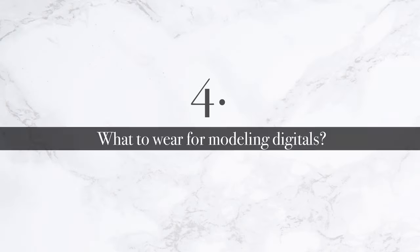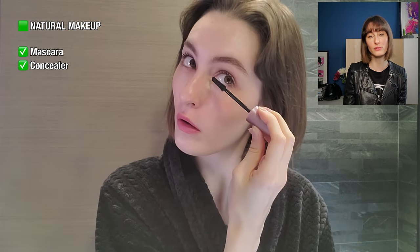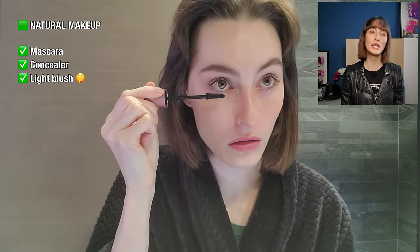Four: what to wear for modeling digitals — makeup. Although some agencies tell you not to wear any makeup at all, you should wear a little bit, but something really natural and very simple, like a bit of mascara and a bit of concealer to cover your dark circles — and that's it. You do not want to wear any fake things: avoid contact lenses, fake lashes, these kinds of things. No contouring, please. They're trying to see what you really look like naturally at your best.